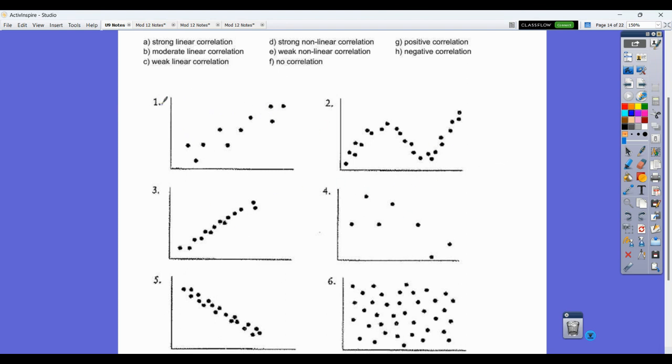So if I were to draw a line of best fit or a curve of best fit for number 1, we would do kind of right through here. So that is linear. We have the choice of strong, moderate, or weak linear. We have strong or weak nonlinear, no correlation, then positive or negative. So this one is linear and this would be considered moderate. So letter B, moderate correlation, but it's also a positive correlation, letter G. So we have to have both of those. When you think linear, you have to also come over to positive and negative.